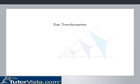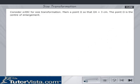Size Transformation. Consider triangle ABC for size transformation. Mark a point O so that OA is equal to 3 cm. The point O is the center of enlargement.